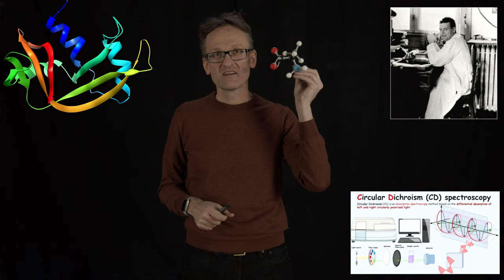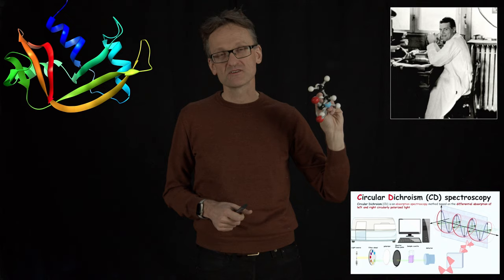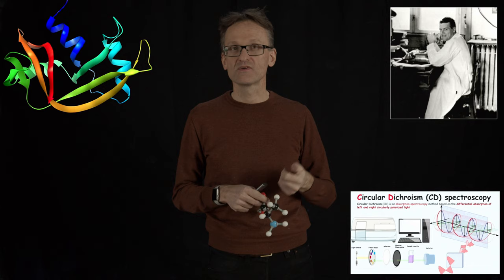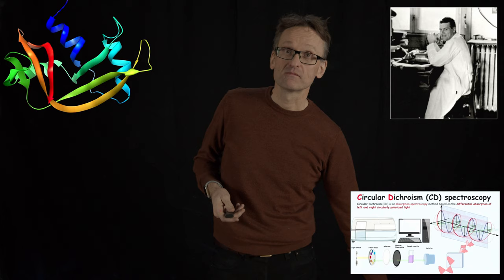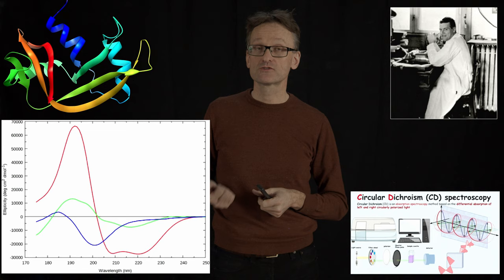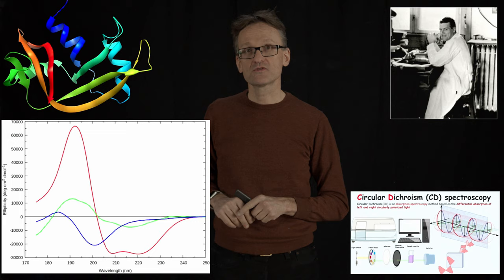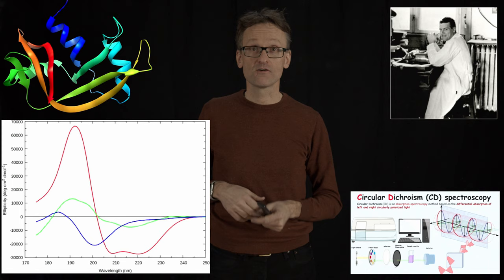You remember that? You can't take the mirror image and rotate it back to the original. That means that the chiral centers here will have a pattern in how they absorb light. In particular, if I compare an alpha helix to a beta sheet to a turn, they're going to have different spectra.